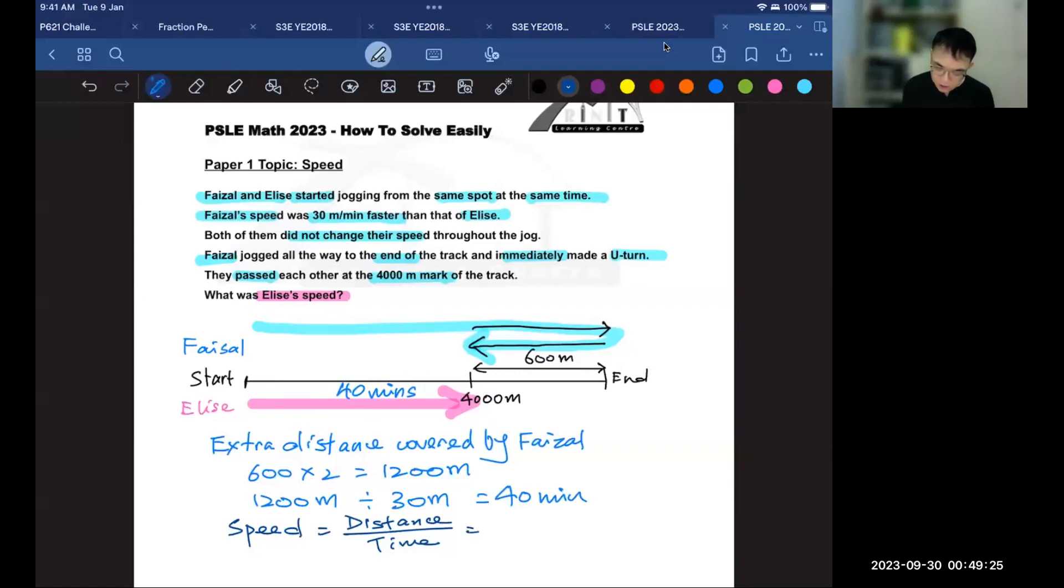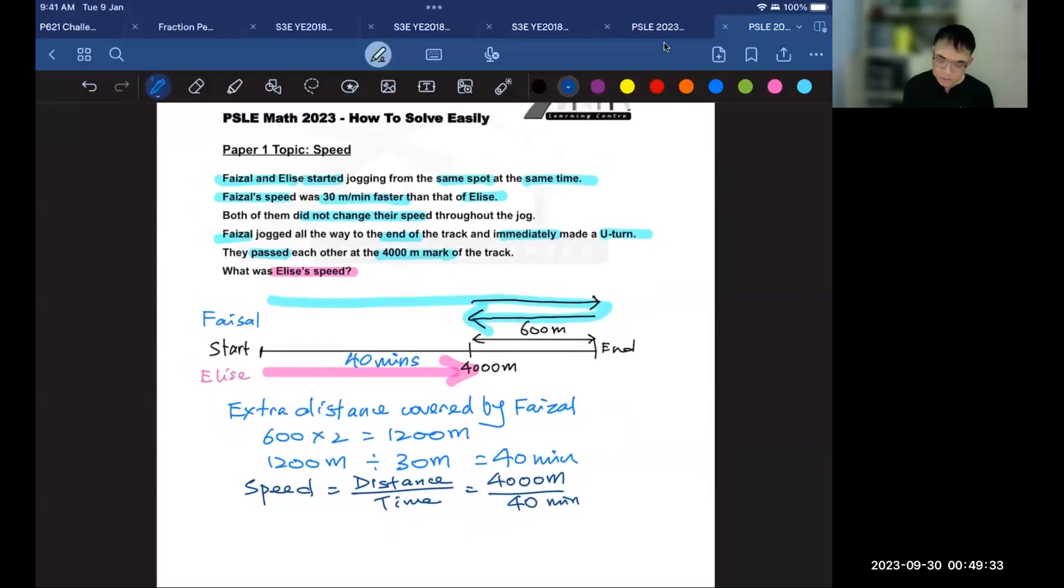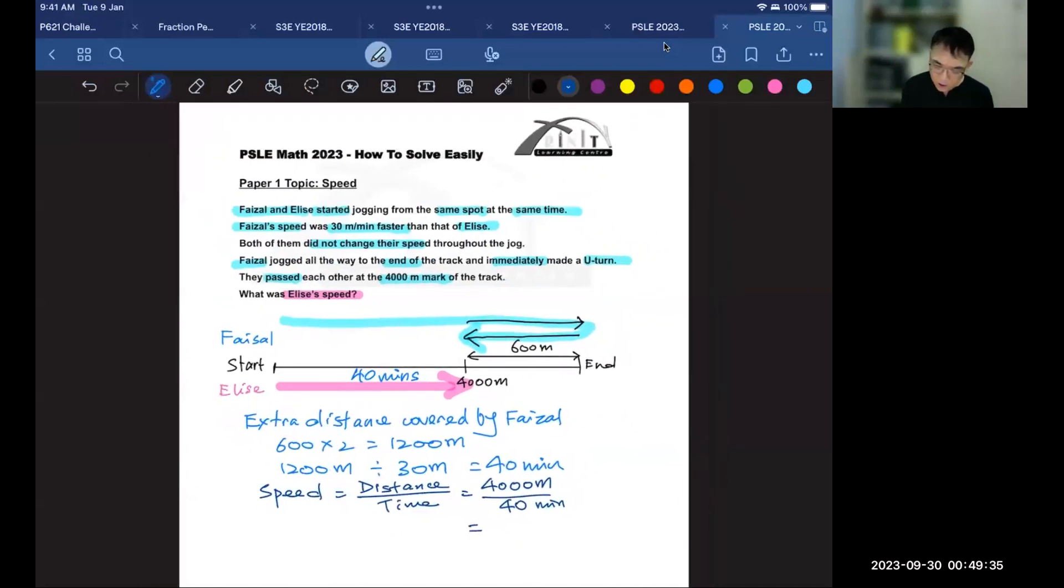So this would be 4,000 divided by 40 minutes. And this working will give us 100 meters per minute. And that is Elise's speed.